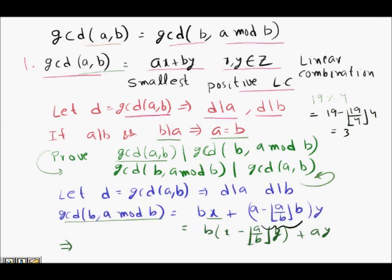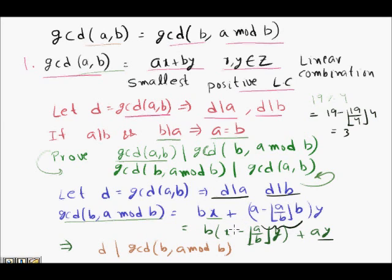Expanding the linear combination, GCD(B, A modulo B) simplifies to B times (X minus floor(A/B)·Y) plus A·Y. Since D divides A and D divides B, D divides this whole expression, meaning D also divides GCD(B, A modulo B).